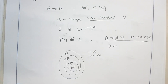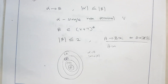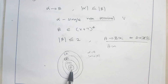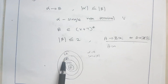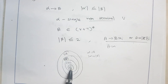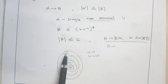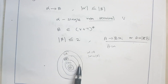This is called the Chomsky hierarchy — the hierarchy in which grammars and languages are arranged. Regular grammar covers the smallest amount; context free grammar includes regular language plus some other problems; context sensitive grammar includes regular, context free, and some other problems; whereas unrestricted grammar includes all context sensitive, context free, and regular grammar along with additional problems. Thank you.